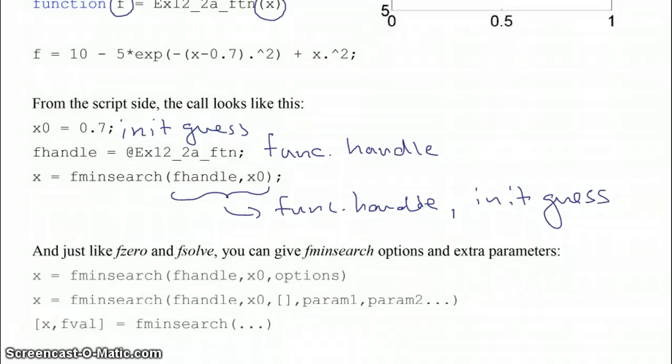Going back to the lecture notes, I just want to point out there are other ways to call fminsearch. In addition to having the two inputs f handle and x0, you can have an options variable here. Or, if you want to pass extra parameters, you can do that just in the same way as we've done with fzero and fsolve. So you put either the options variable in here, or empty brackets if you don't want to do anything with the options, but the empty brackets have to serve at least as a placeholder.